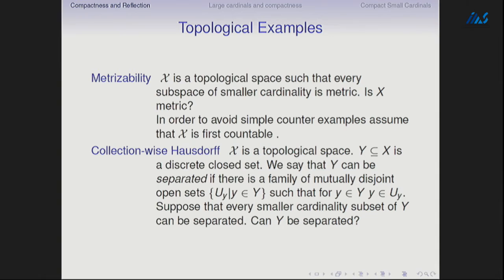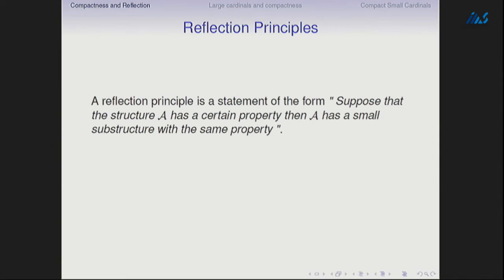Collectionwise Hausdorff is definitely related to the problem of metrizability. You have a topological space with a discrete closed set — a set of points that never converge to anything. We say Y can be separated if you can get the usual topological separation: an open set around each point such that the open sets are mutually disjoint. Suppose that every smaller cardinality subset of Y can be separated — can Y be separated? The question is whether some assumption about the space can guarantee that from small collectionwise Hausdorff we get the whole thing.